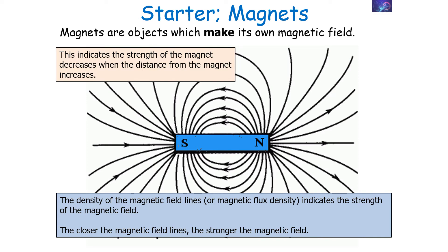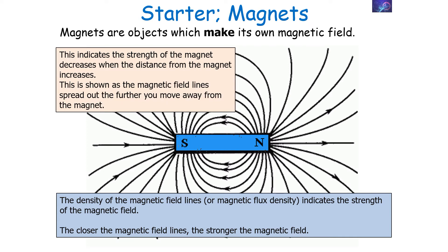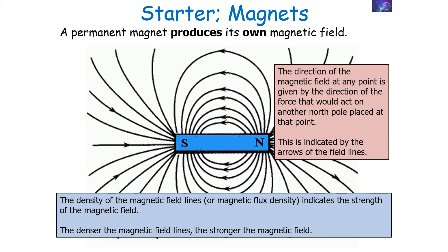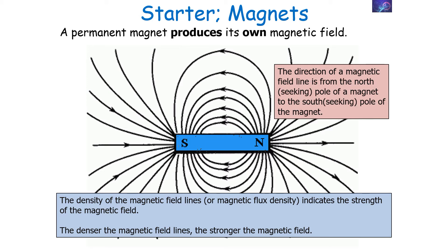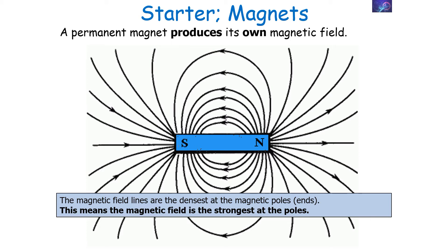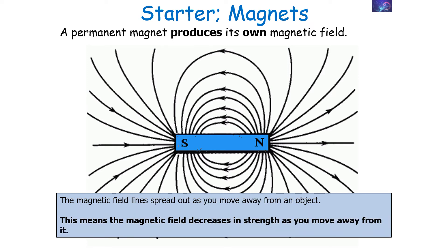The denser the magnetic field lines, the stronger the magnetic field. The closer the magnetic field lines are to each other, the stronger the magnetic field in that region of space. This indicates that the strength of the magnet decreases as the distance from the magnet increases, shown as the magnetic field lines spread out the further you move away. Magnetic field lines show the path a positively charged object will take if placed there, indicated by the arrows on the field lines. The magnetic field is strongest at the poles — the ends of the magnet — because the field lines are closest together there, meaning the field density is highest.